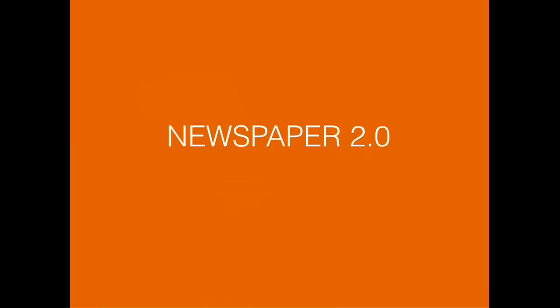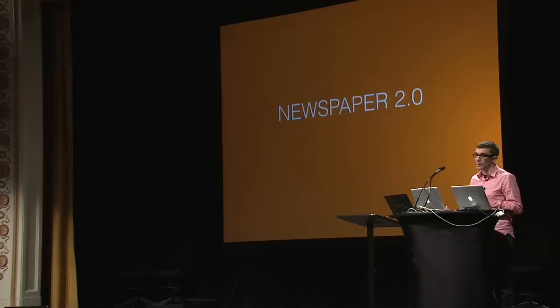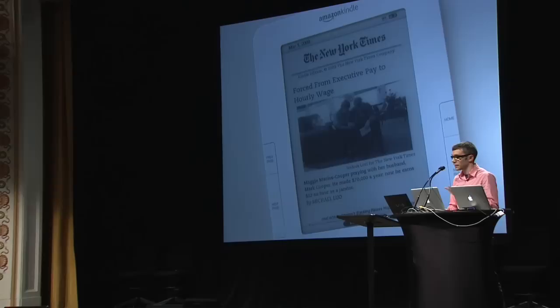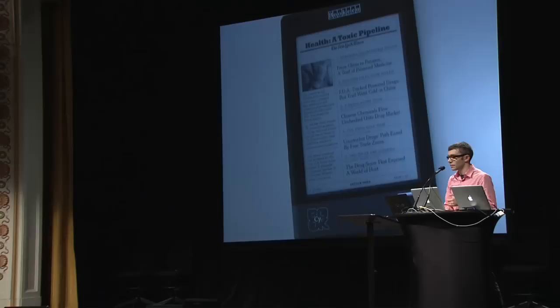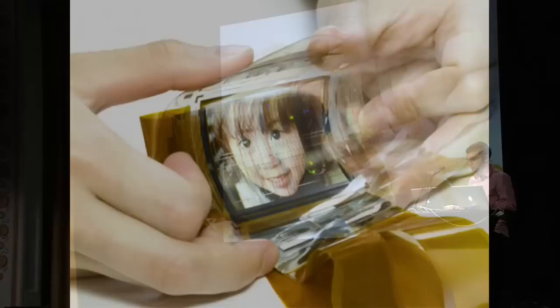Another project we've been doing a lot of work with is this idea called Newspaper 2.0 — about what the next generation of news devices could be. We prototyped and worked with the Kindle folks and are looking at other e-reader devices. This is some flexible e-ink we have in the lab, looking at how flexible devices could come out.